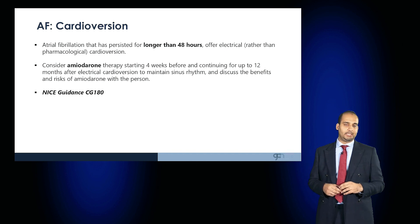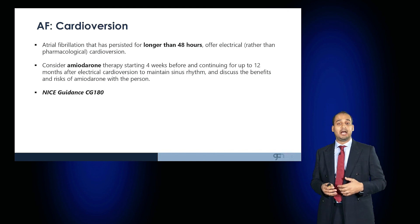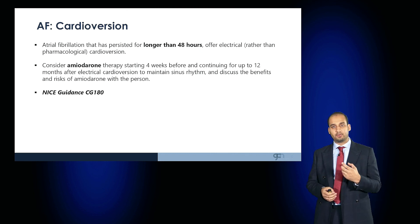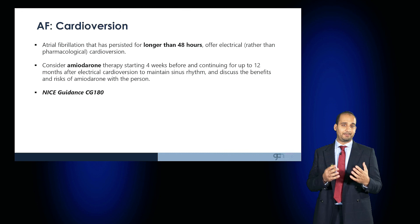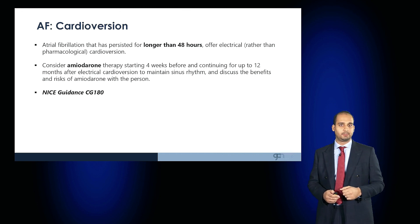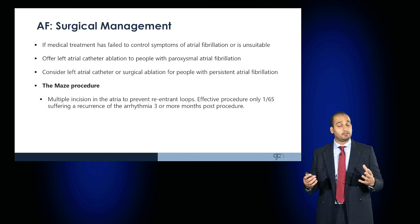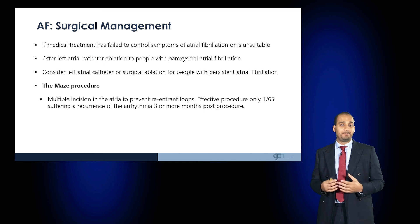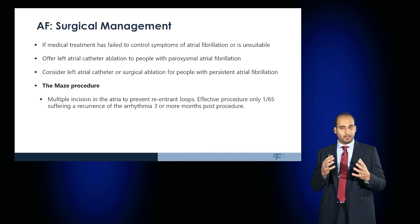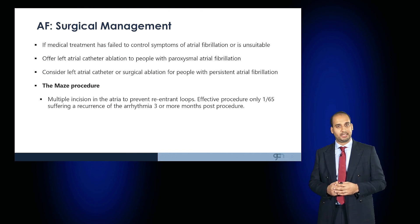Cardioversion can be used for persistent AF to restore sinus rhythm. Before this elective procedure, patients can be started on amiodarone and are anticoagulated to reduce the risk of blood clots. Surgical options include the MAZE procedure, where a number of incisions are made to prevent re-entrant loops, as well as several other interventional opportunities available to treat atrial fibrillation. Thank you for attending this Medicine Masterclass.